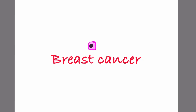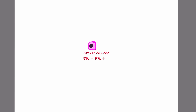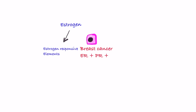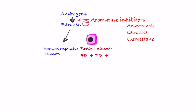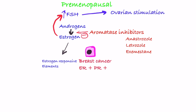Breast cancers that are hormone positive either express estrogen receptor or progesterone receptor. Production of estrogen is inhibited by aromatase inhibitors like letrozole, anastrozole, and exemestane, which decrease estrogen levels in the blood. However, in premenopausal women, decreased estrogen leads to increased FSH, which stimulates the ovaries to increase estrogen production, thereby overcoming the effect of aromatase inhibitors.